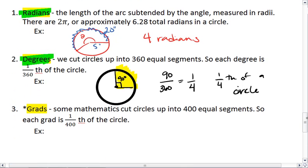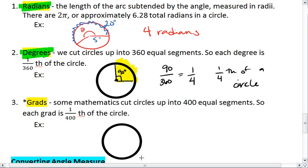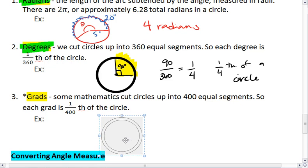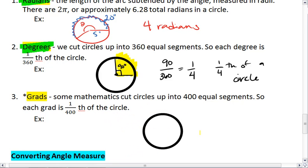Lastly, we have grads. Grads are very similar to degrees, but instead of cutting my circle into 360 parts, I'm going to cut it into 400 equal parts. So each grad is 1/400th of a circle.